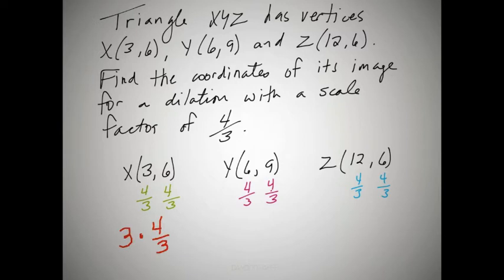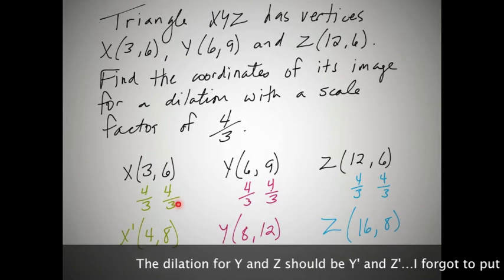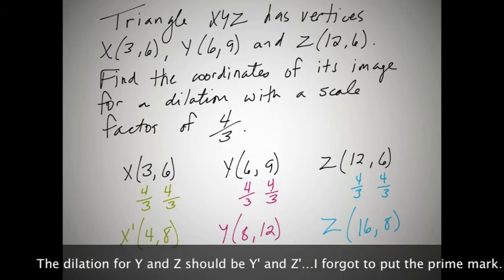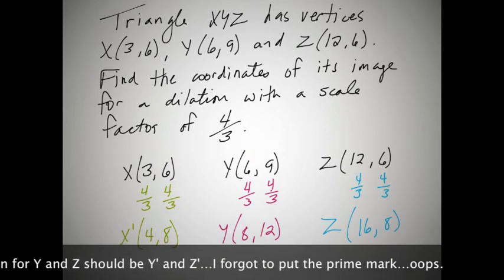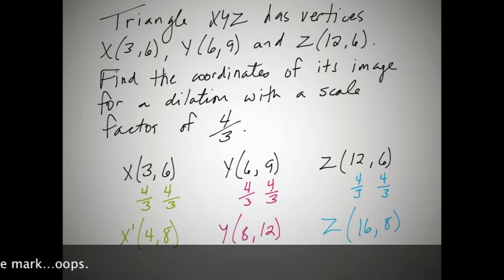Essentially, all we're doing is multiplying 3 times 4 thirds. We cross-reduce first, so what we're left with is 4. So when we do that for each of the problems, this is our result. We've already done the 4 here. Let's look at the 6. 6 divided by 3 is 2. 2 times 4 is 8. We've done a 6 already, so 9 divided by 3 is 3 times 4 is 12. And these two are repeated over here and here.